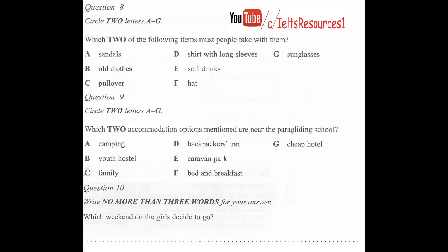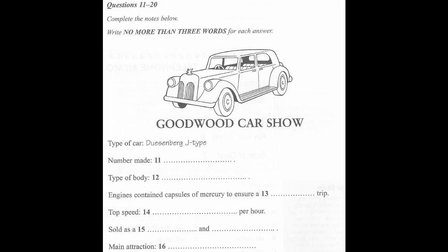That is the end of Section 1. You now have half a minute to check your answers. Now turn to Section 2 on page 32. You will hear a reporter talking on the radio about old racing cars. First, look at questions 11 to 16.